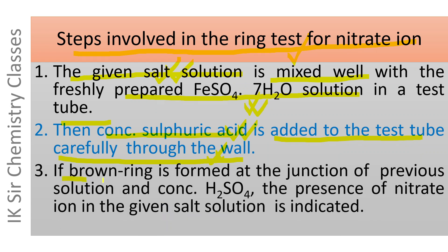If a brown ring is formed at the junction of the previous solution and the concentrated sulfuric acid, it indicates that nitrate ion is present in the given salt solution.